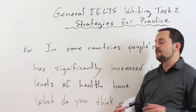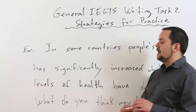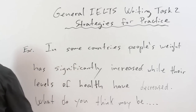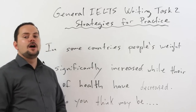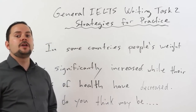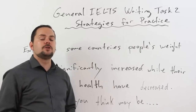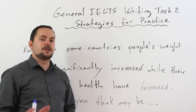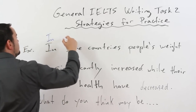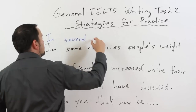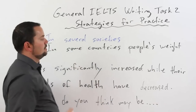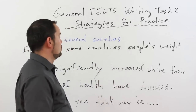At home, you should write out the full question, then paraphrase it above the original. For the paraphrasing, I suggest using a different color, because that way you're going to see your work very clearly. When you review your work later on — which you should always do — it will be nice and clear. So in several societies — so 'countries' could be 'societies' or 'nations' might be even more specific.